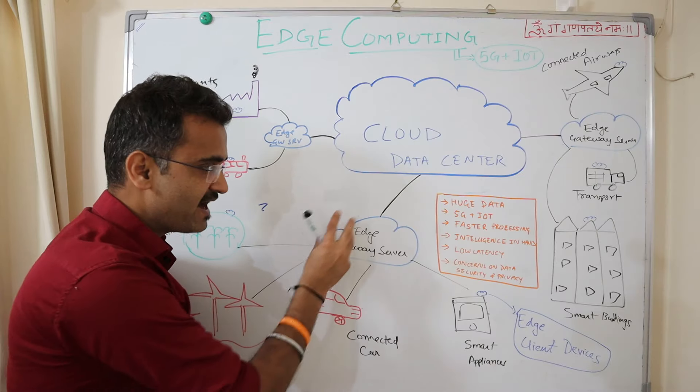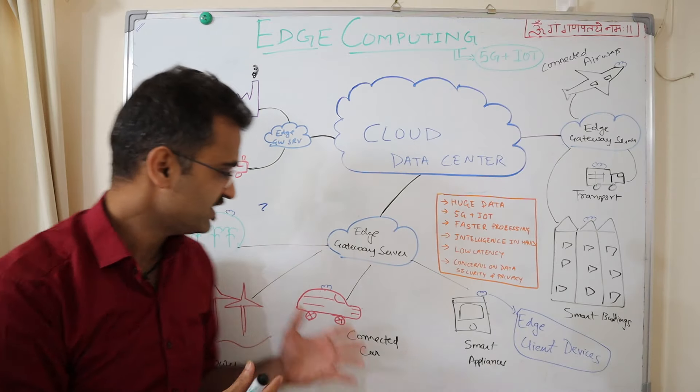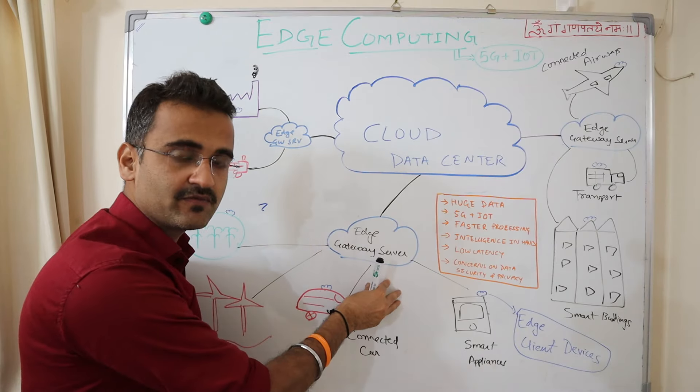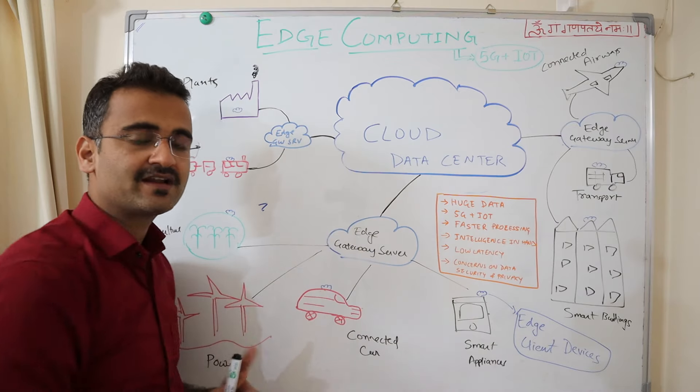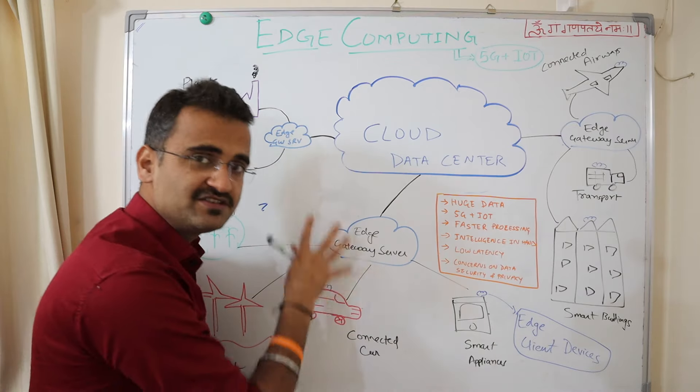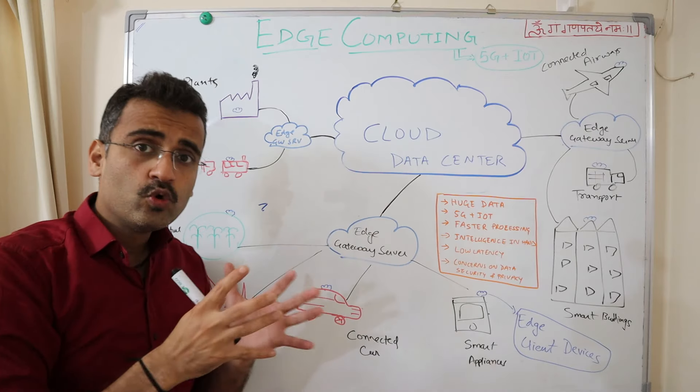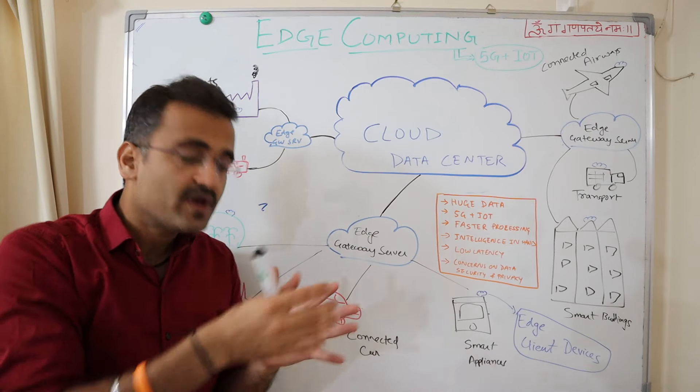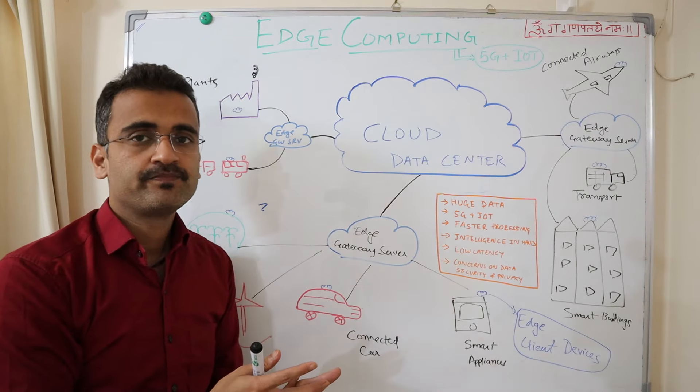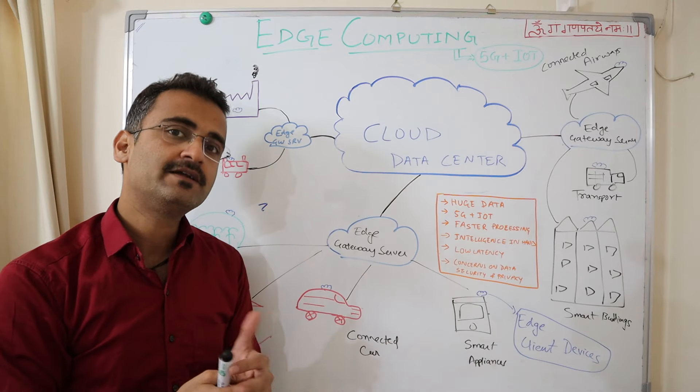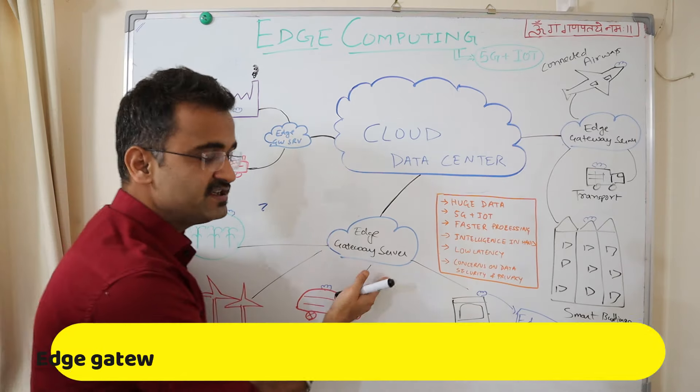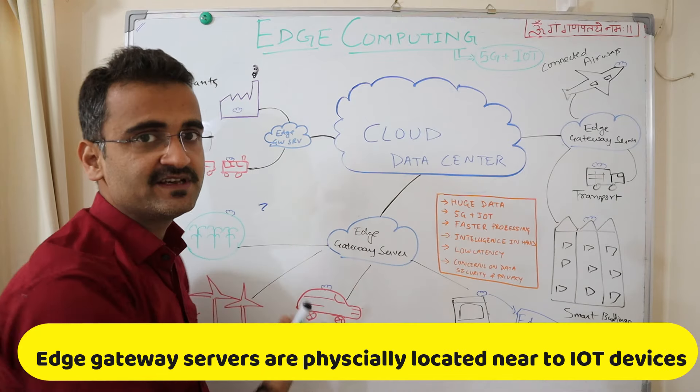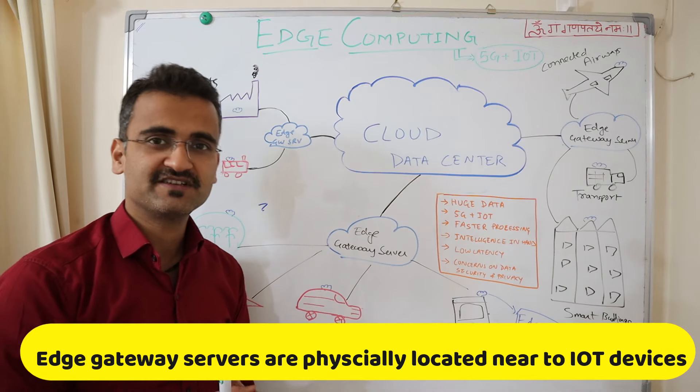And then it processes that data. It has some sort of intelligence built in within and it has some storage capacity as well. And then it processes the data. And then for higher workloads, it sends it to the nearby gateway server. What is the difference between sending it here versus sending it directly to the cloud is that your edge gateway server would be physically located very near to your device. So that reduces the latency and increases the processing power. That's why all these gateway servers will be deployed physically closer to all these different systems.